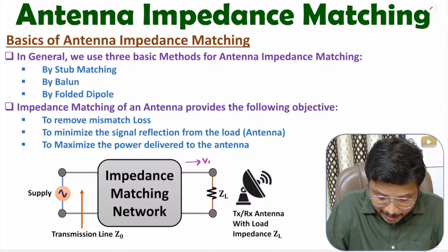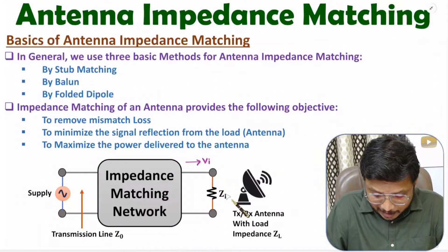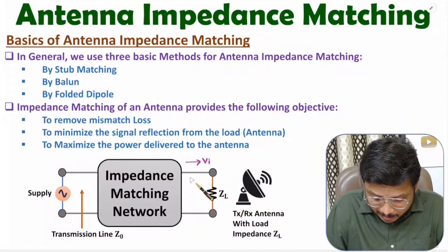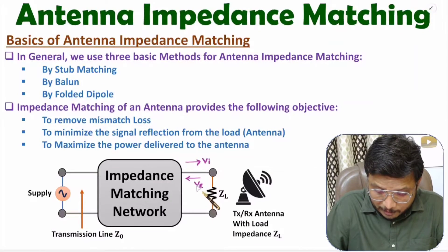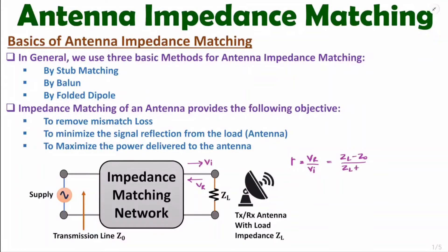If you don't have proper impedance matching, there will be reflection of signal. For example, if the incident signal has voltage Vi, then because of impedance mismatch between transmission line and load there can be a reflected signal with voltage Vr. The reflection coefficient rho equals Vr divided by Vi, which is the reflected voltage divided by the incident voltage.